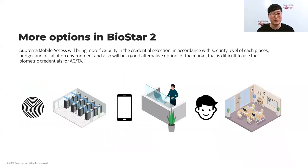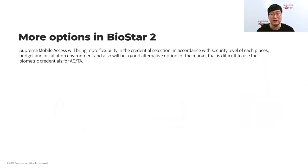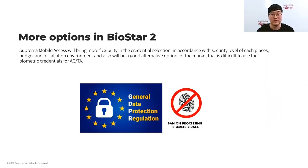Lastly, and most importantly, Suprema Mobile Access gives more choices to the customer. Under the BioStar 2 platform, customers can choose which credential to apply — biometric for high-security access points, mobile access for normal doors or visitor management. Also, due to GDPR regulations in some regions where biometric data is not allowed for access control or time attendance, mobile access is a strong alternative since it contains no biometric information, and our mobile phones are something we always carry.